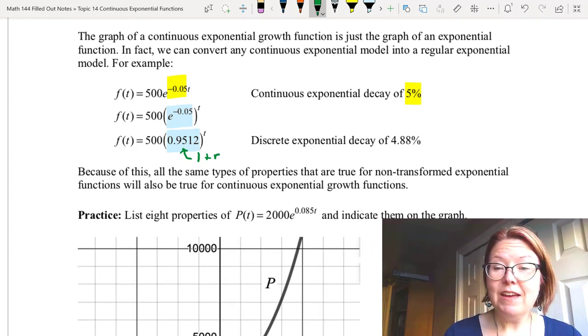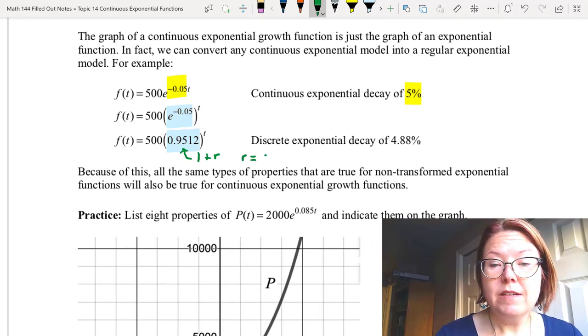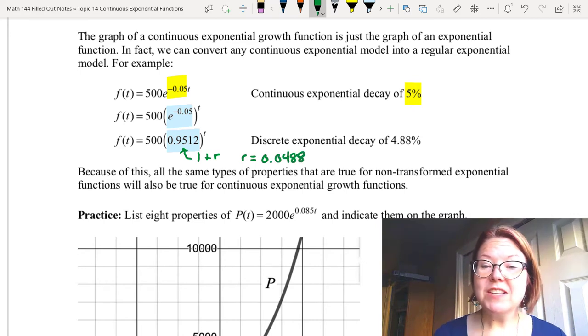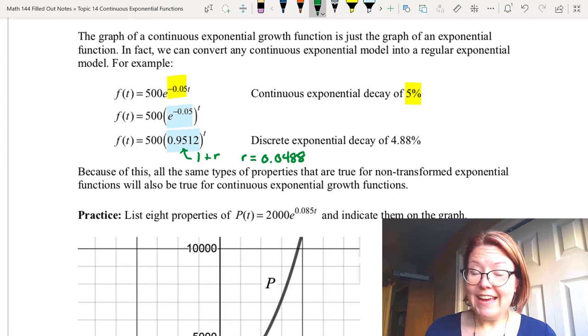In this case r is going to be negative and r is going to be 0.0488 which tells us that the exponential decay if this was a discrete model would be 4.88 percent.